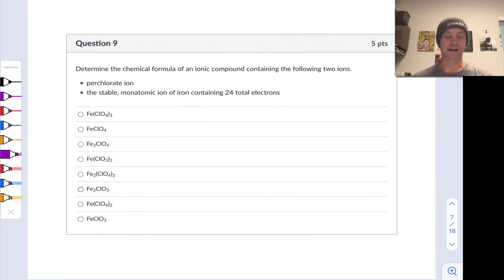Here again, we have another nomenclature question. Determine the chemical formula now of an ionic compound containing the following two ions. Sort of pseudo-nomenclature related. We're going to need to do some thinking here. We've got perchlorate ion is the anion and we've got the stable monatomic ion of iron containing 24 total electrons, and that's the cation. So let's make note of that. Perchlorate is an anion.